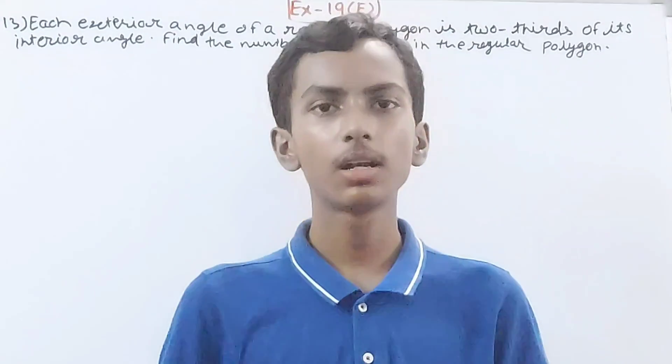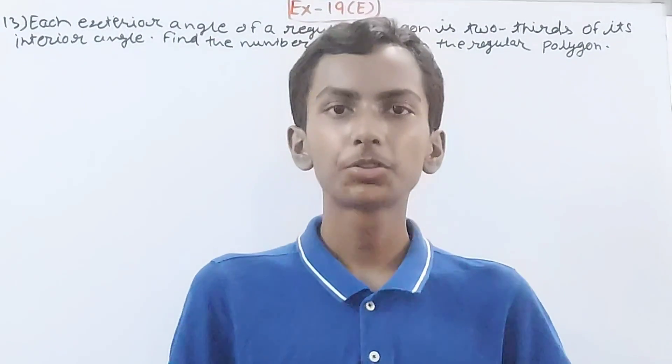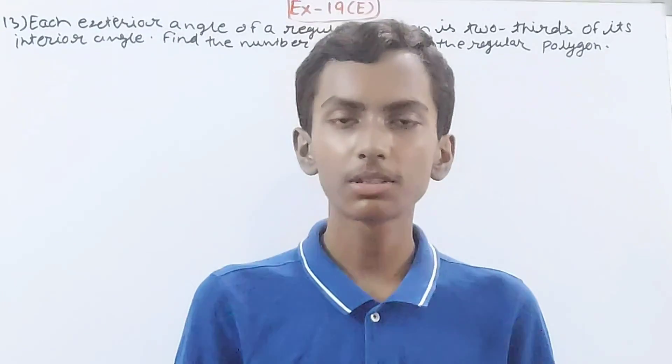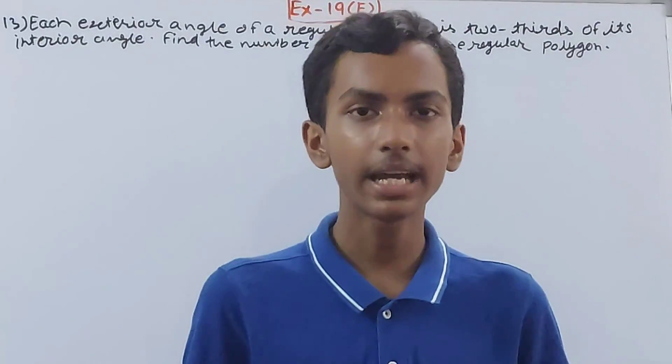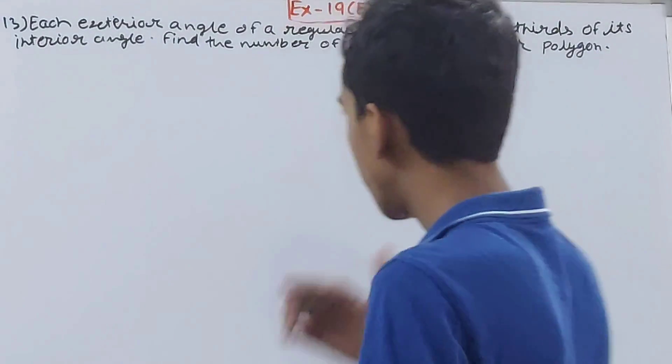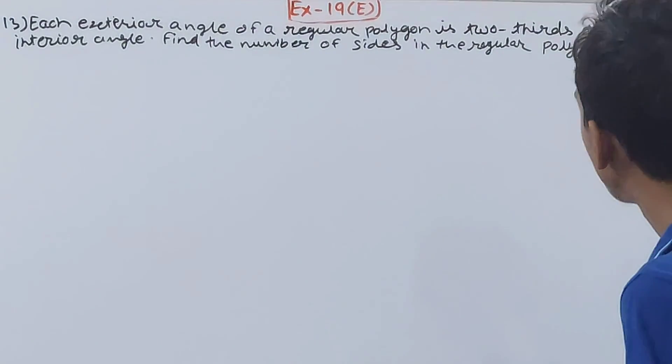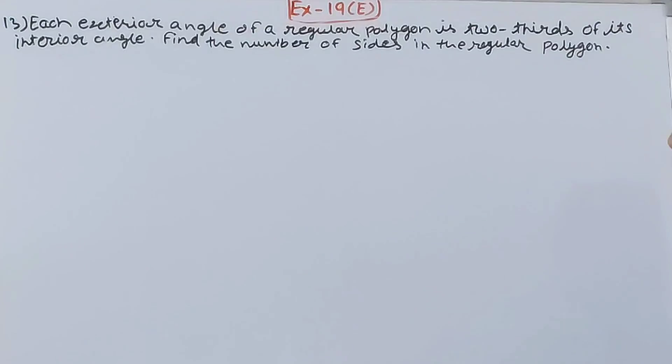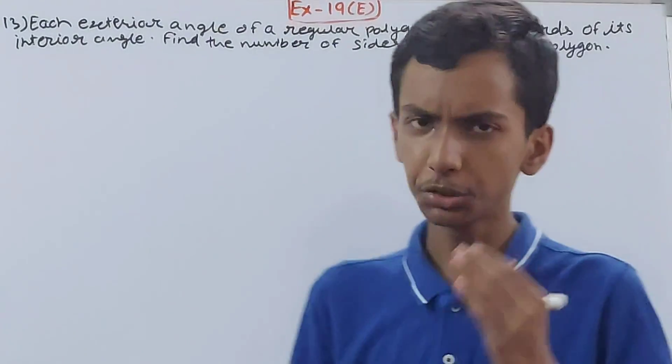Hello friends, welcome back to my YouTube channel and unlock your learning. In this video, we are going to solve ICSE mathematics class 8, chapter number 19, special types of quadrilaterals, exercise 19, equation 13. Each exterior angle of a regular polygon is two-thirds of its interior angle. Find the number of sides in the regular polygon.